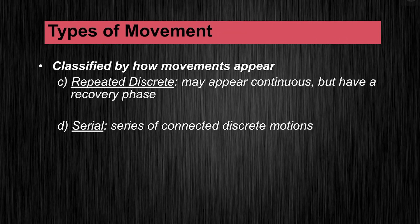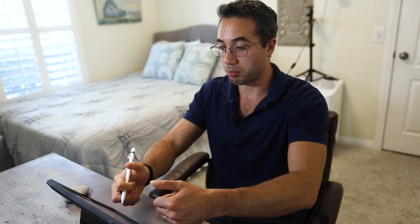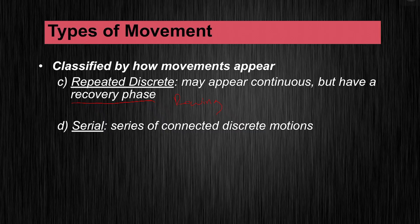We also have repeated discrete and serial movements. Repeated discrete is sometimes hard to distinguish from continuous movement, but in this type of movement there is a recovery phase. Think of things like rowing — you have the pull stroke that propels you forward, and then a recovery phase where you reset to pull again. Wheelchair racing is the same: a bilateral push on the wheels and then a recovery to grab the wheels again. Serial movement is a series of connected but different discrete motions, like triple jump, where each jump is different because it uses a different leg. Something like shot put is similar — whether you do a glide or rotational style, there are different types of movements leading up to the throw, but they're all linked together into the shot put motion.